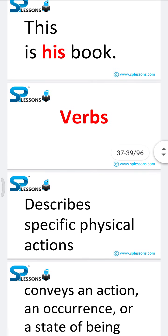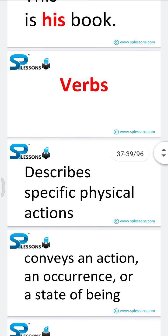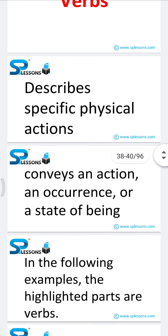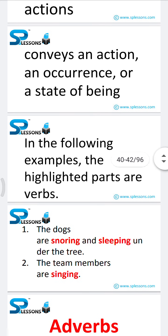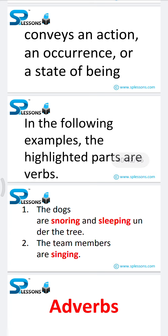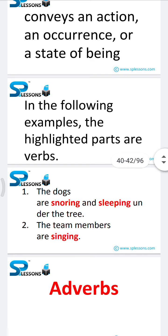Next, verbs describe specific physical actions. Verbs convey an action, occurrence, or state of being. In the following examples, the highlighted parts are verbs. 'The dogs are snoring and sleeping under the tree' — here 'snoring' and 'sleeping' are actions performed. 'The team members are singing' — here 'singing' is a verb.